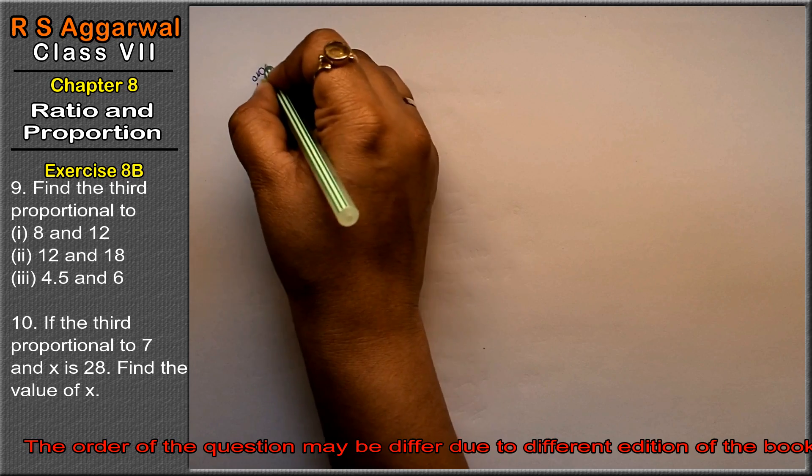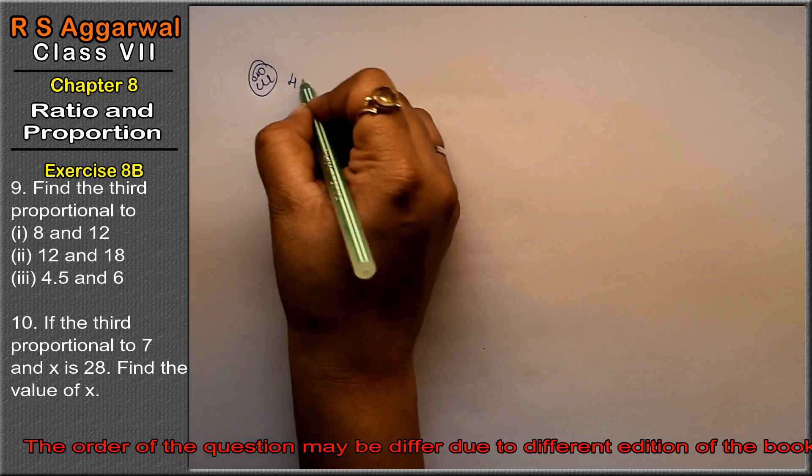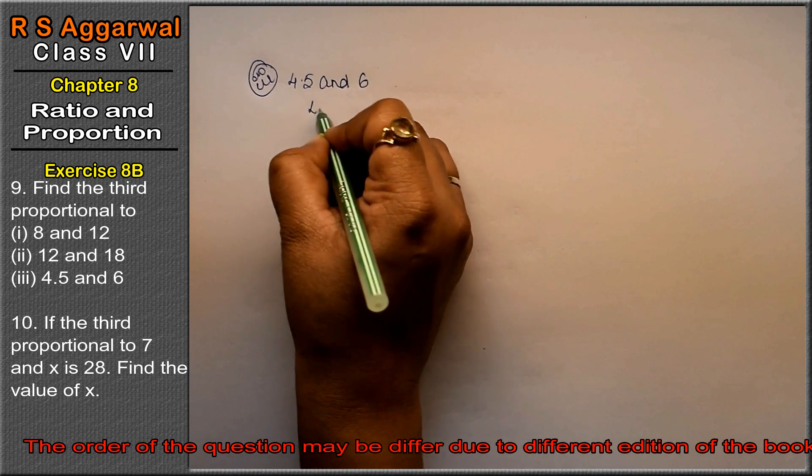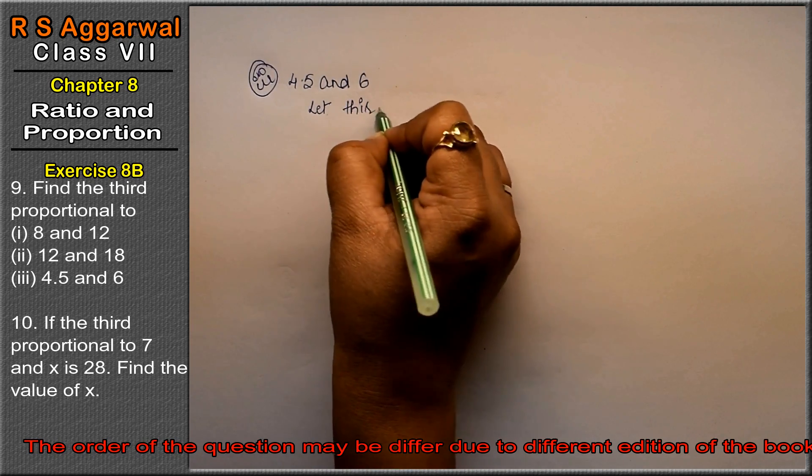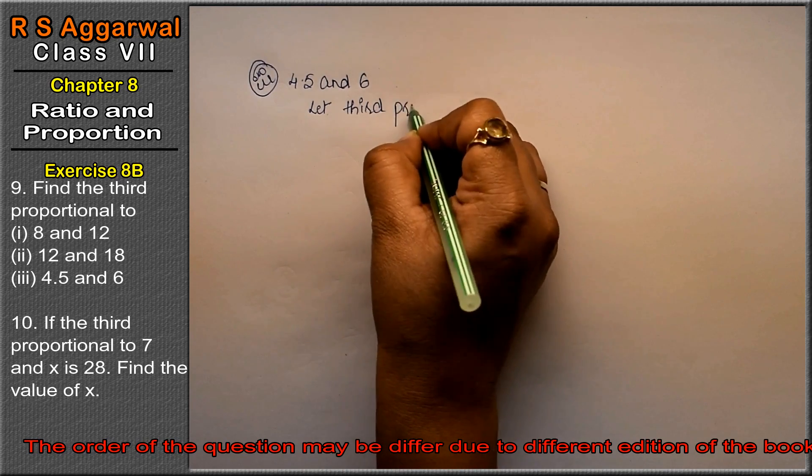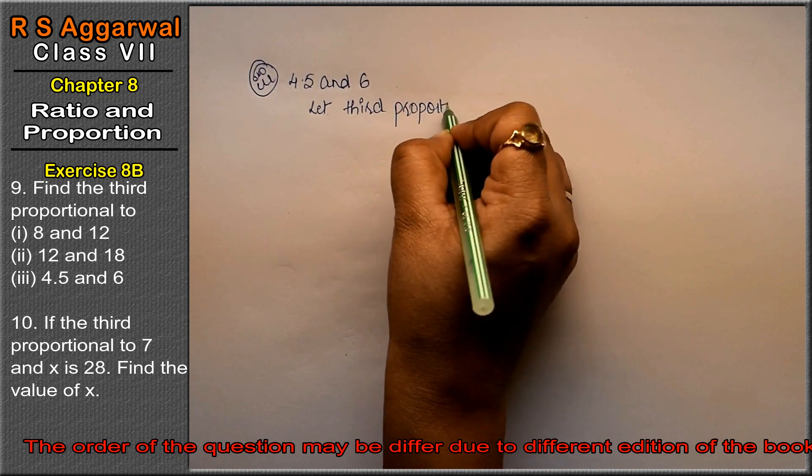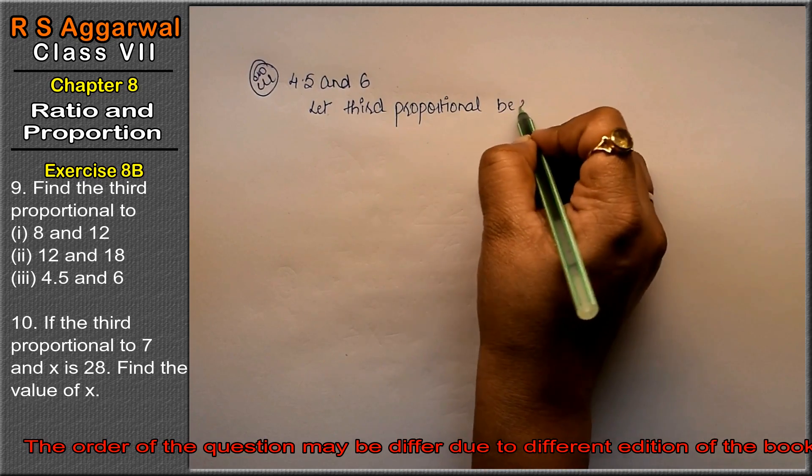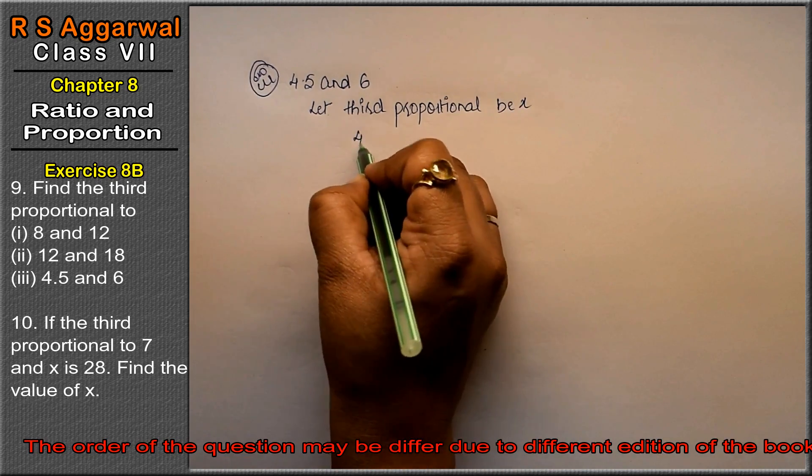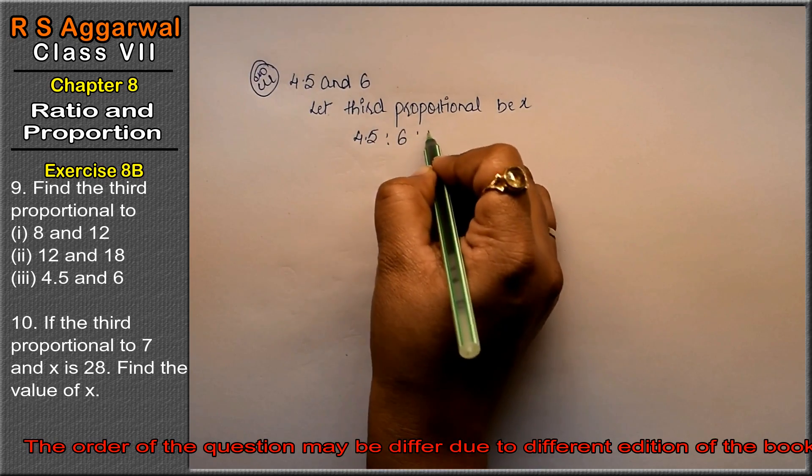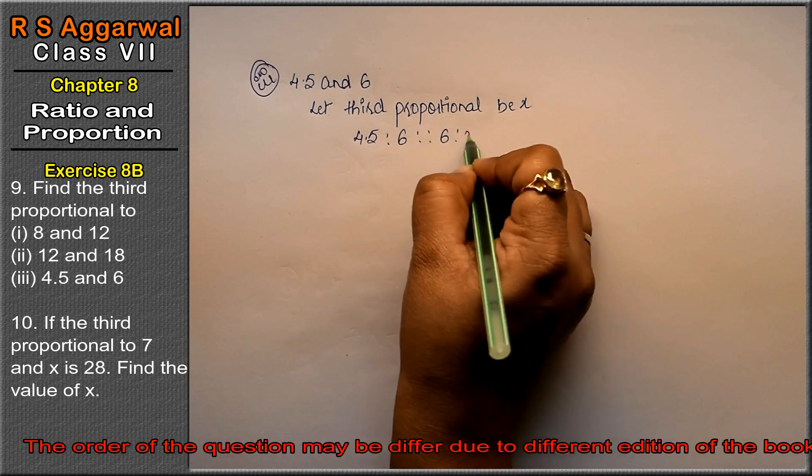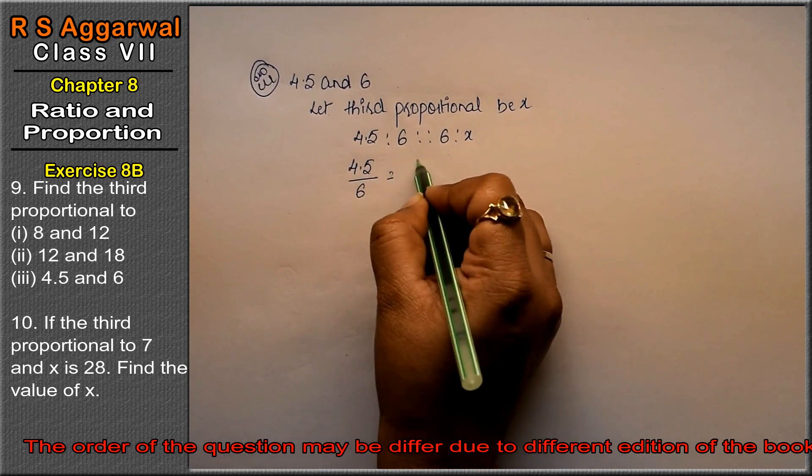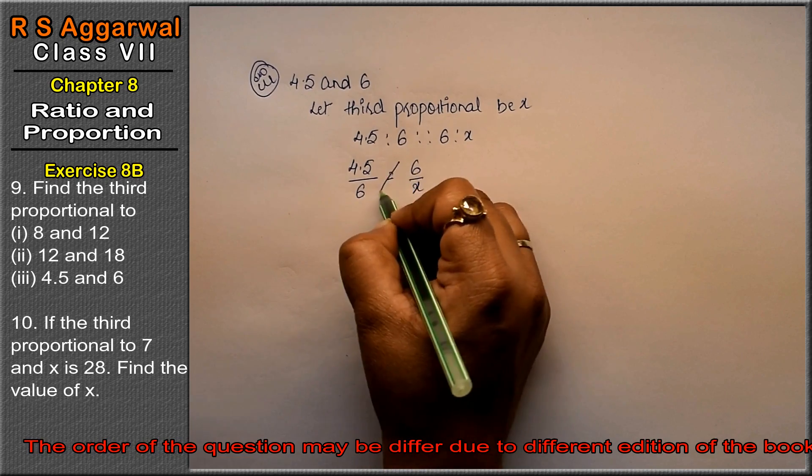What do we do in third part? We have 4.5 and 6. So let third proportional be x. So what did we do in third part? 4.5 is to 6 is to 6 is to x.